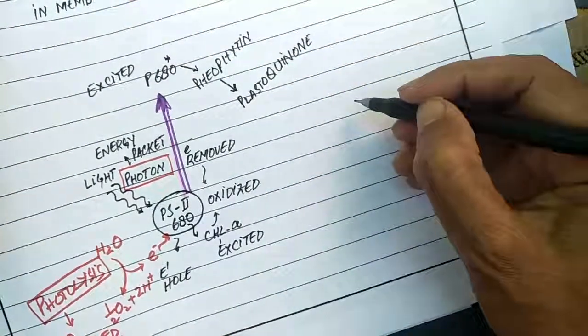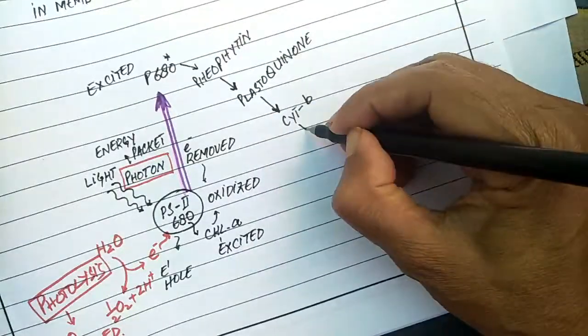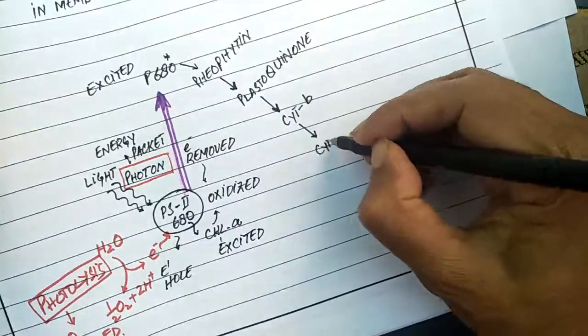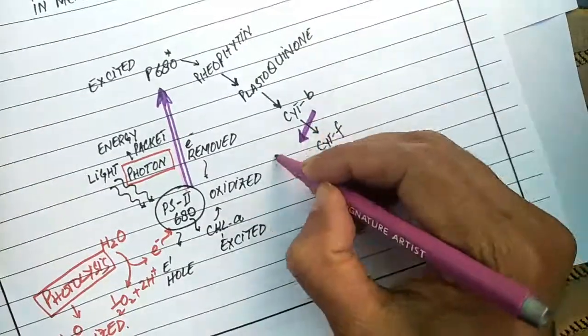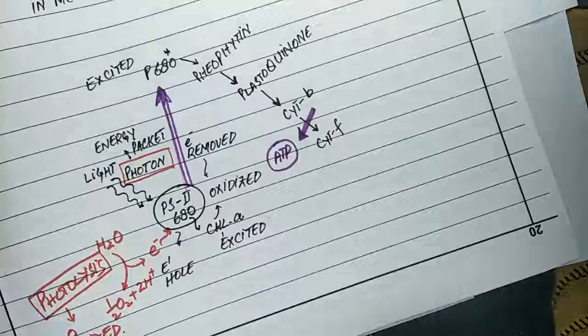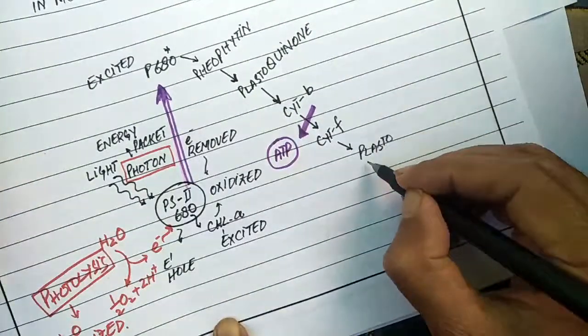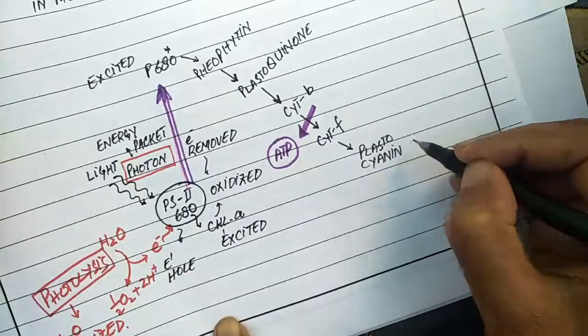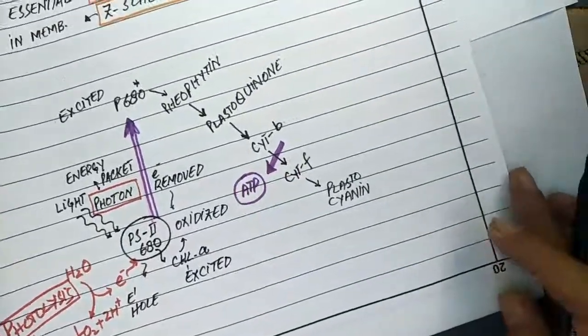Here enough energy is released that is responsible for the formation of a bond between ADP and inorganic phosphate, producing a molecule of ATP. At the end of the electron transport chain, plastocyanin is present as the final electron acceptor of photosystem II, which gets reduced by accepting electrons from cytochrome BF complex.